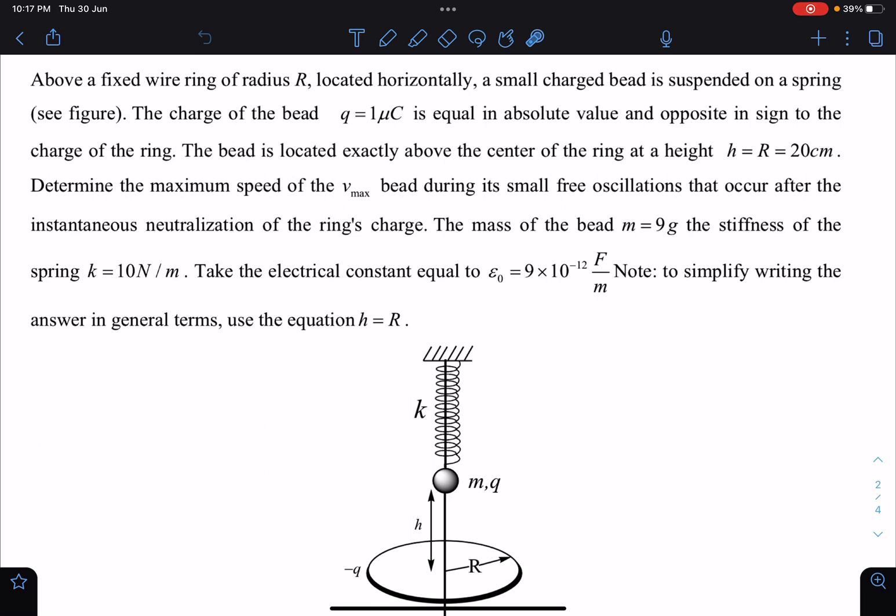The bead is located exactly above the center of the ring at a height h, which is equal to R, and 20 cm is given. So we have to find out the maximum speed of the bead during its small free oscillations that occur after the neutralization of the ring's charge.